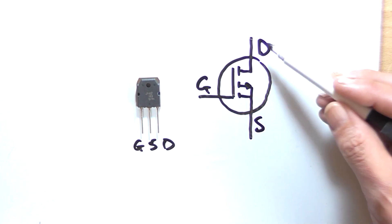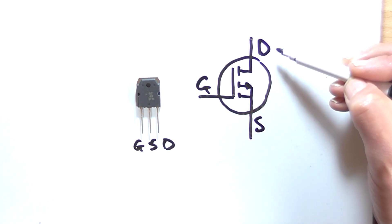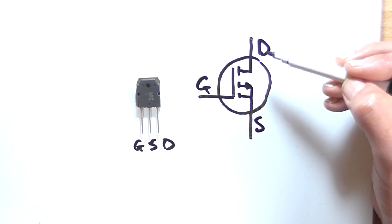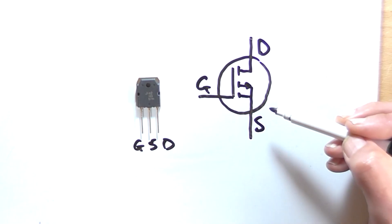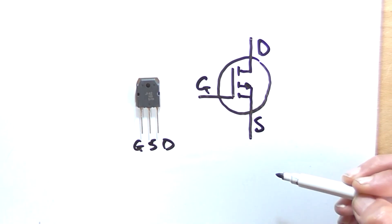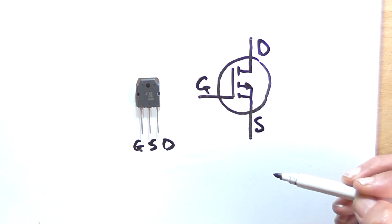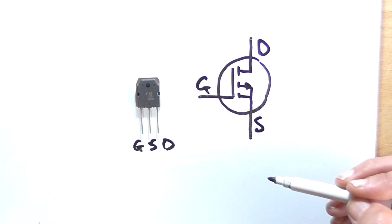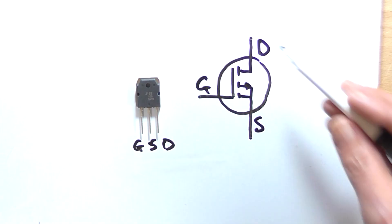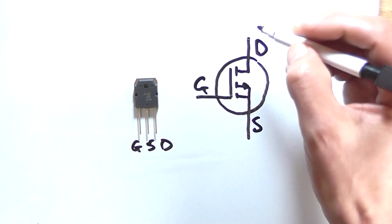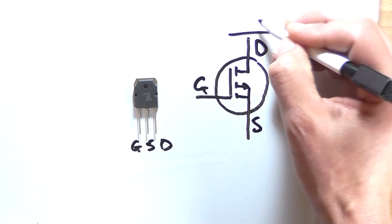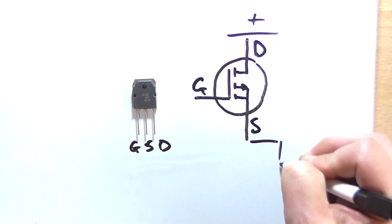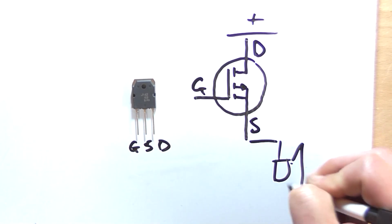In most cases the drain connects to the supply side of the circuit and the source connects to the lowest impedance path of the circuit. So in the instance of a power amplifier, the drain would connect to the positive supply rail and the source would connect to the speaker.